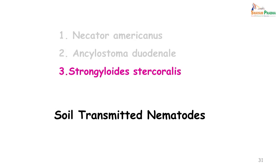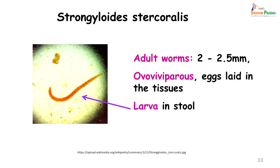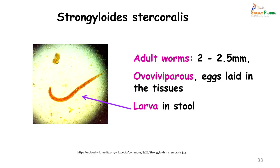The next soil-transmitted nematode is Strongyloides stercoralis. The adult worm is only 2 to 2.5 millimeters in length and lies in the cecum and large intestine; the adult worm is usually not seen unless picked up during colonoscopy. This worm is ovoviviparous — as soon as the eggs are laid they immediately hatch into larval form. It is the only nematode in which we find larval forms in the stool; you will never find ova of Strongyloides stercoralis.